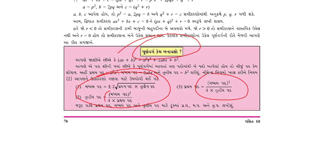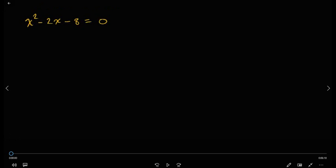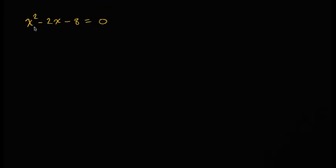Hello, I have a video. This video is a video and it is a video. We will see that the video is a video. We will see that the video is a video. x squared minus 2x minus 8 equals 0, so we can do this.